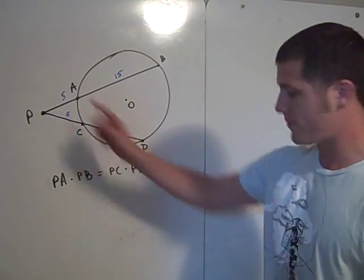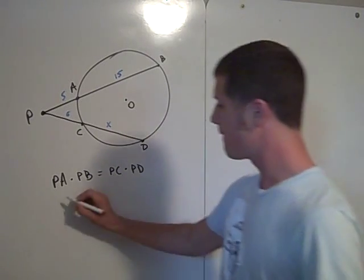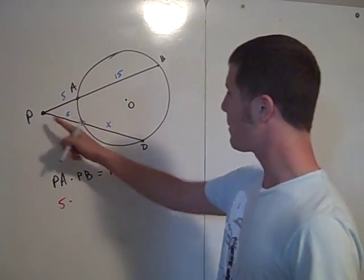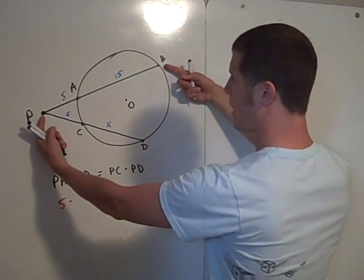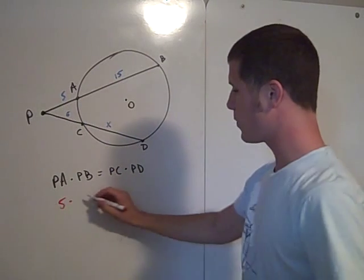PA is 5, PB, well, PB is 20, right? 5 plus 15 is 20.